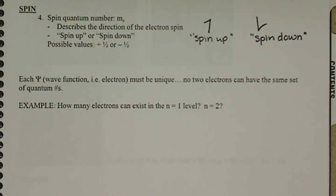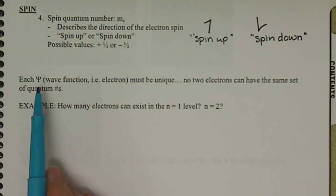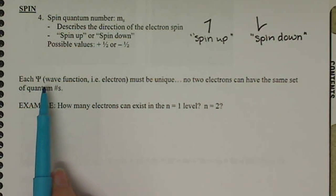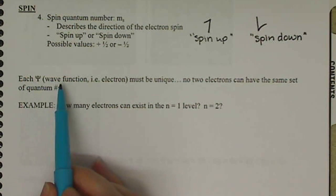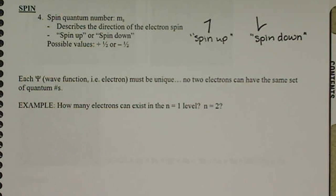So putting all four of our quantum numbers together, now we can discuss what our psi, what our wave function means. Each psi, each wave function describes an electron, and that description has to be unique. We cannot have two identical electrons. They have to all be different.